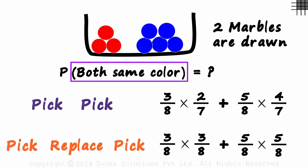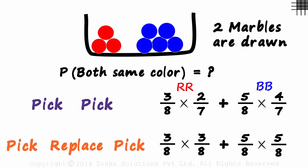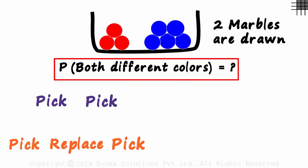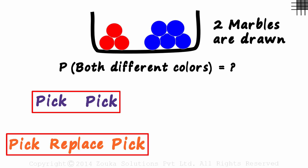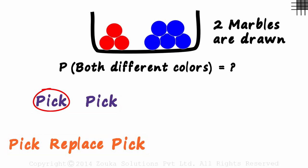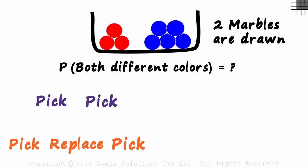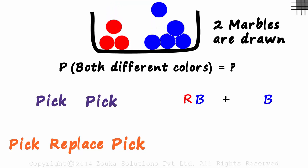Both of the same colour means either both are red or both are blue. Now, what if I slightly modified the question and asked you the probability of both being of different colours? Two marbles are drawn — what is the probability that both are of different colours? Different colours means the first marble is red and the second is blue, or the first is blue and the second is red.